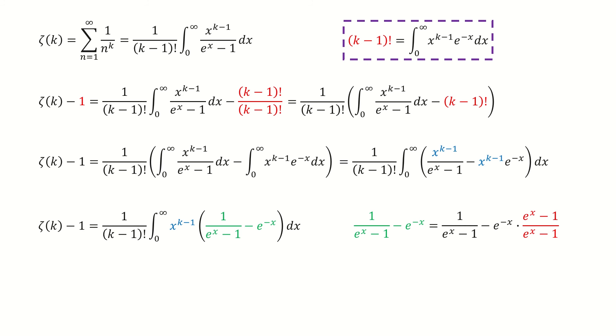We need to simplify this green term. First, we multiply this red term on both numerator and denominator to the second term. Then we simplify the second fraction term. Finally, we got here after simplifying them. Then we plug in to replace this green term.